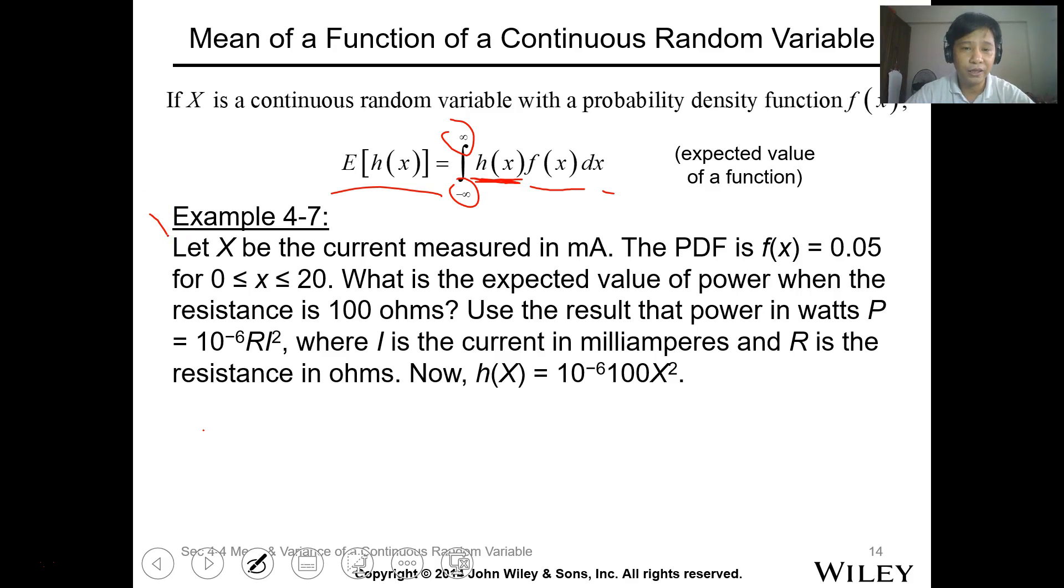So let's have this example. Let X be the current measurement in milliampere. The PDF is f of X equals 0.05 for X ranging from 0 to 20. What is the expected value of power when the resistance is 100 Ohm? Use the result that power in watts P is equal to 10 to the negative 6 R I squared, where I is the current in milliampere and R is the resistance.